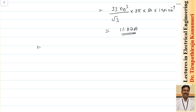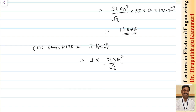Total charging kVAR = 3 × Vphase × charging current per phase = 3 × (33 × 10³/√3) × 11.87, which equals 678.5 kVAR. Because there are 3 cables (3-phase), we multiply by 3; for a single-core cable, you would take only 1.